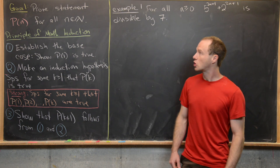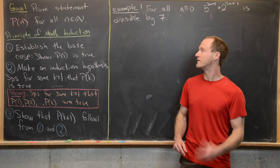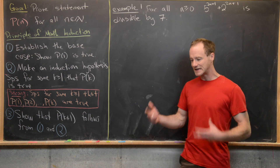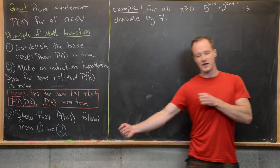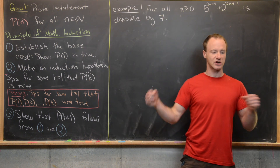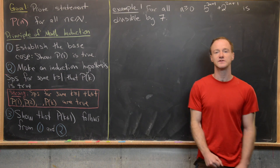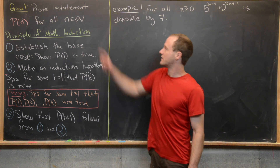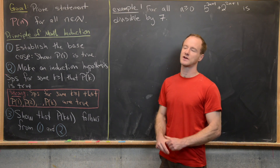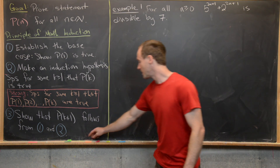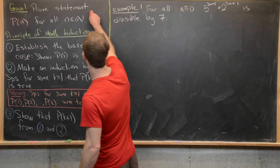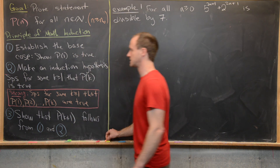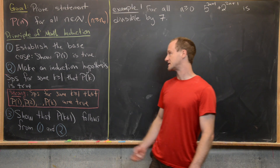Our goal is to prove a statement P(N) for all N which are natural numbers. The idea with induction is that you've got a bunch of statements you want to prove are true across natural numbers. Sometimes this is not all natural numbers but all natural numbers after a certain point — you would write N greater than or equal to N-naught. So let's run down the steps.